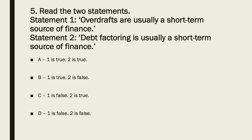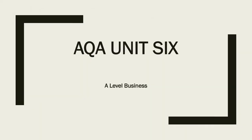Statement one — overdrafts are a short-term source of finance, so that is true. Statement two — debt factoring is also a short-term source of finance. One is true, two is true, so the answer is A.